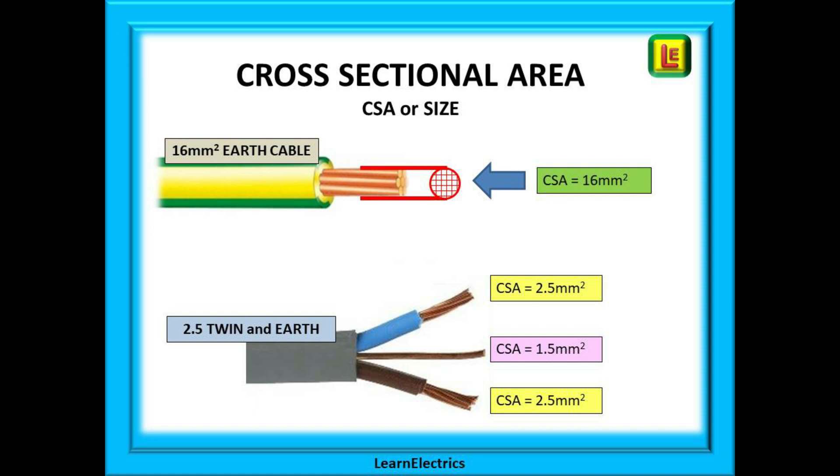We are showing here a typical earth cable with the cross sectional area of 16 millimeters squared so we call it a 16 millimeter cable but the copper is actually only about five millimeters across. Also here we are showing you some twin in earth. The brown and blue are both 2.5 millimeters squared in area but they measure not quite one millimeter across. The 1.5 millimeters squared earth is a lot less than one millimeter across.